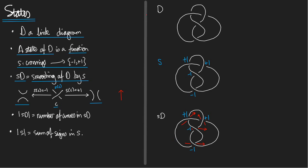For a plus one smoothing, I decide which way is up, I erase the crossing, and then I join things up in such a way that the arrow can drive through. That's the positive smoothing. For a minus one, I delete the crossing and join it up in such a way that it breaks the up arrow. Applying this to our diagram with signs plus, plus, minus, minus gives us our smoothed diagram sD.